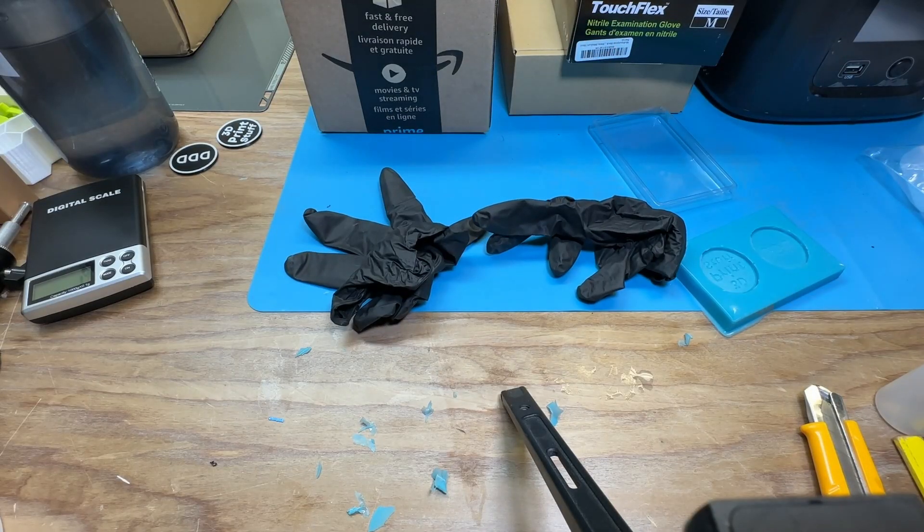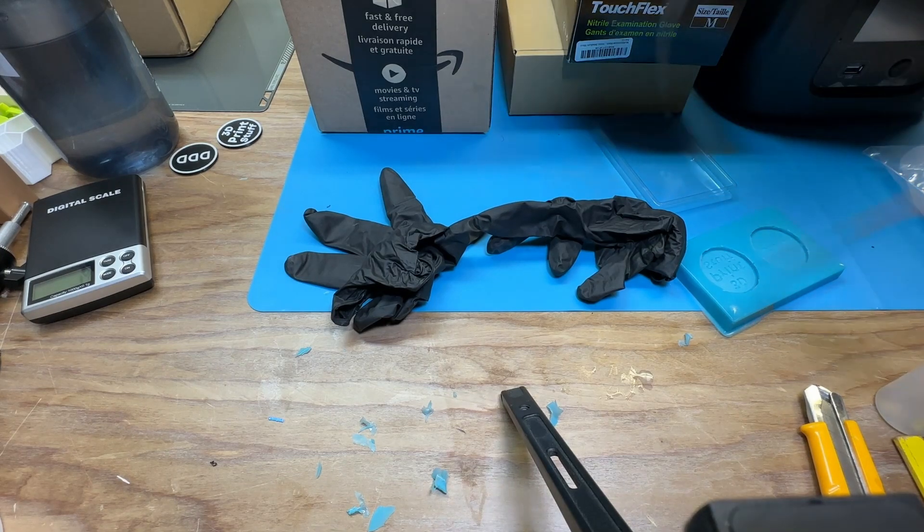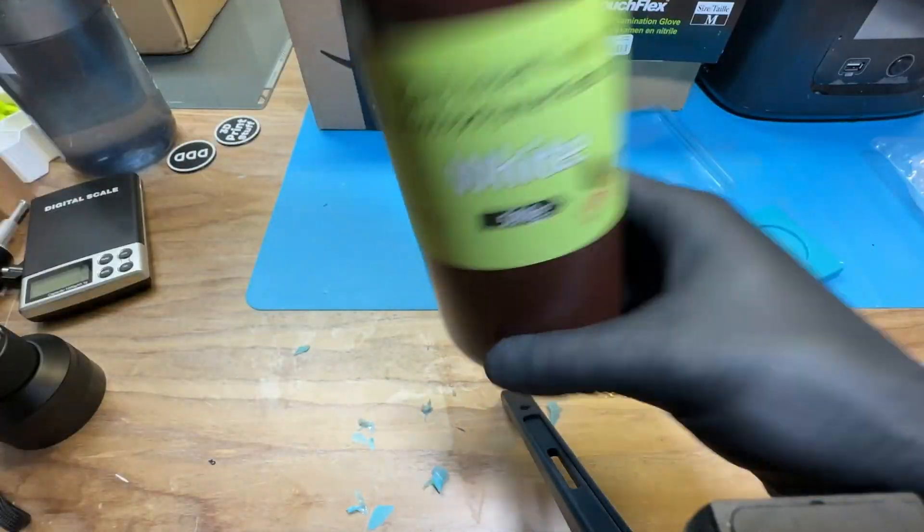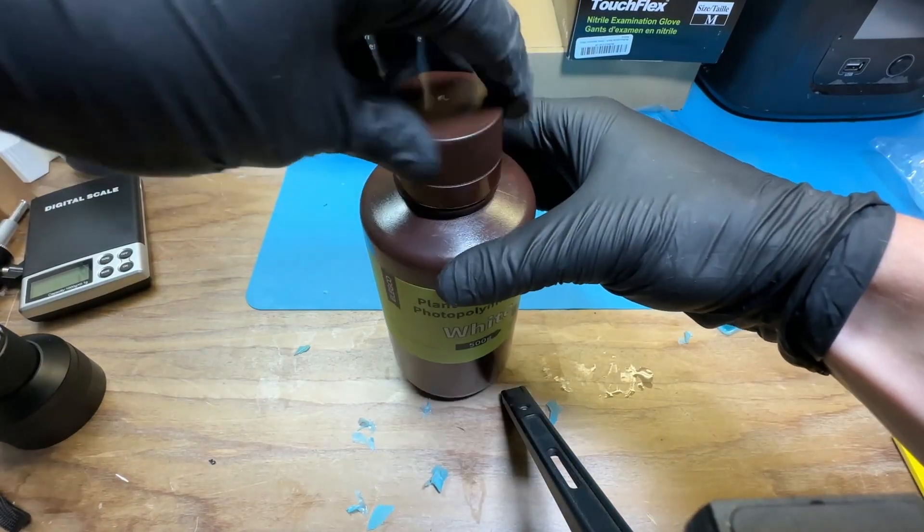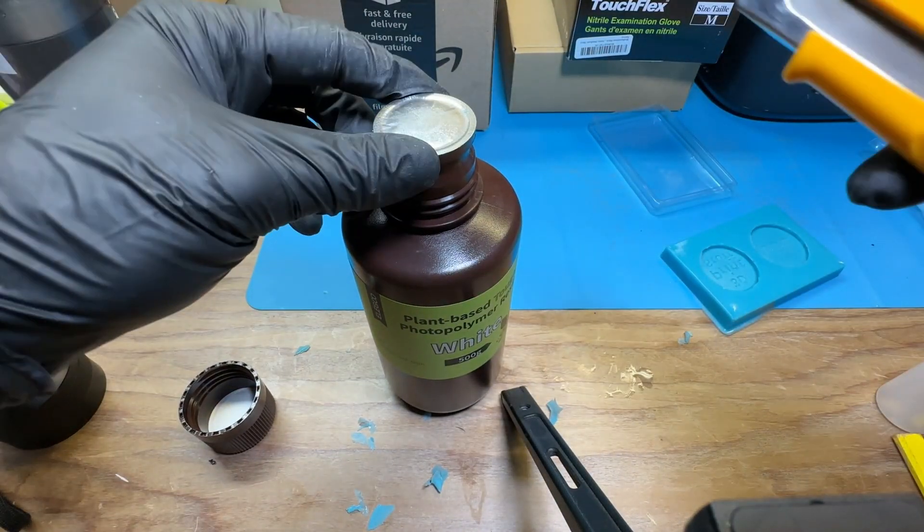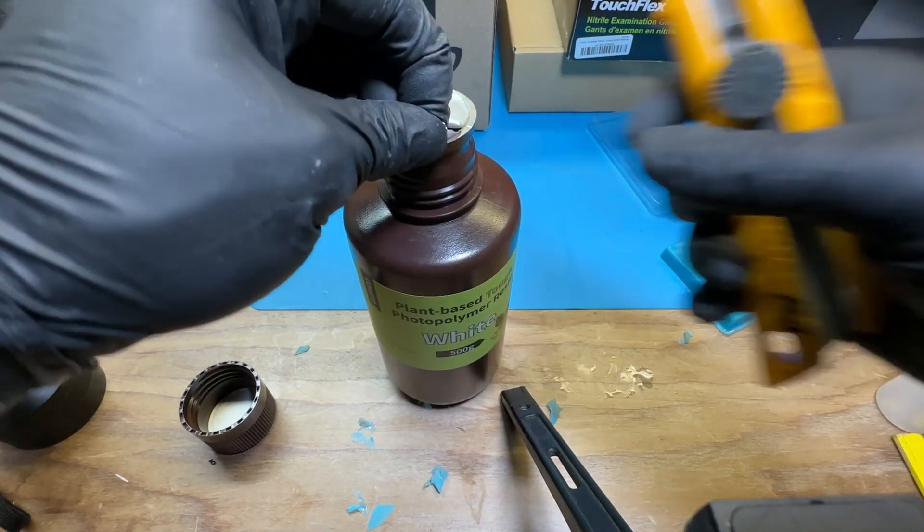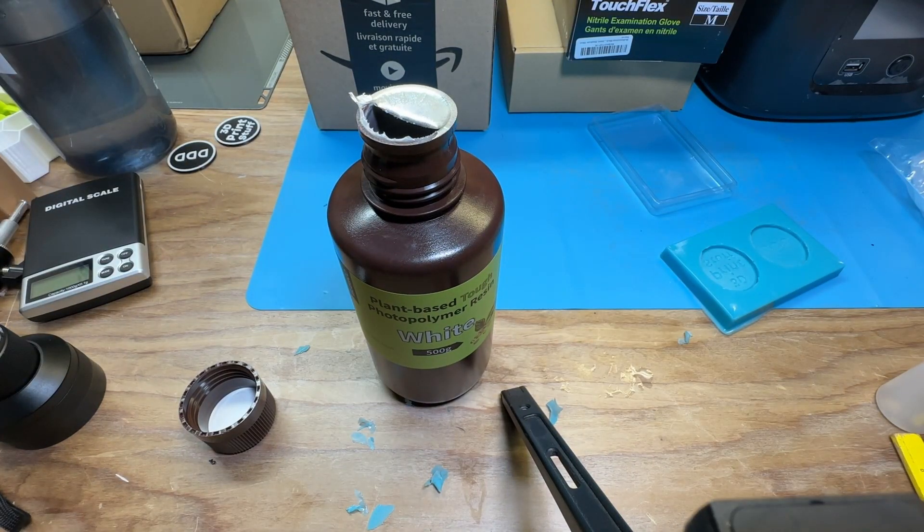While handling 3D printing resin I like to wear nitrile gloves and wear a respirator with the proper cartridges just as a safety precaution. I'm using Elegoo white and black resins that you have to shake well before using. I'll open it up here and then transfer it into a needle nose bottle.